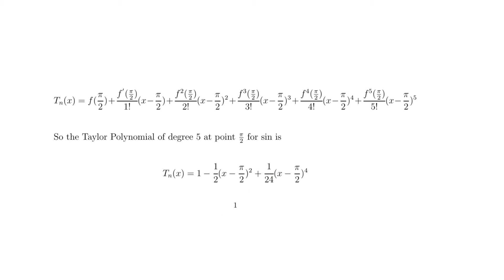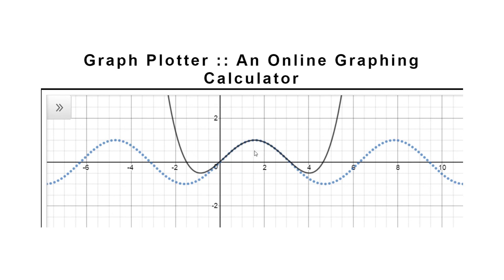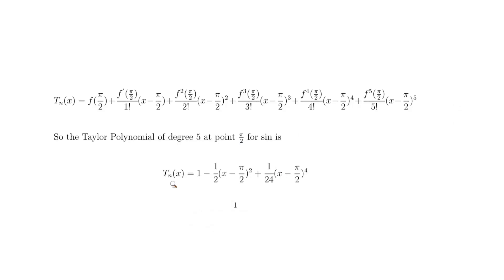We can verify this on a graph. The dotted line is the real sine graph and the thick black line is our Taylor polynomial. At π/2 — the peak — it's very accurate, all the way back to 0. It starts to pull away as we move toward negative values or toward π. So the Taylor polynomial of degree 5 at π/2 for sine is 1 − ½(x − π/2)² + (1/24)(x − π/2)⁴. Thanks for watching — please comment and subscribe.